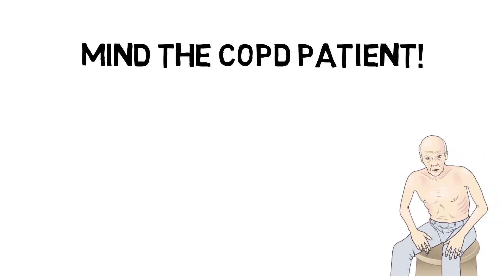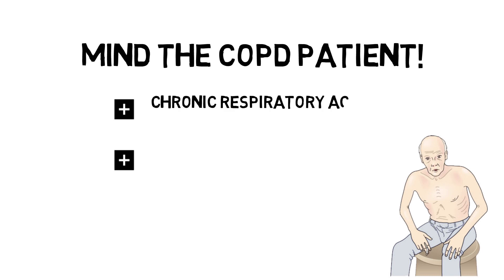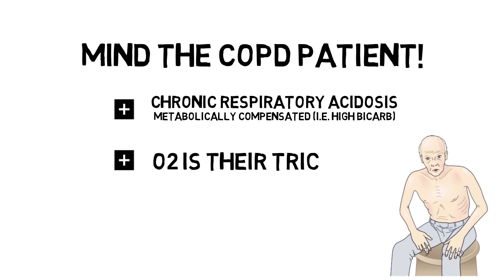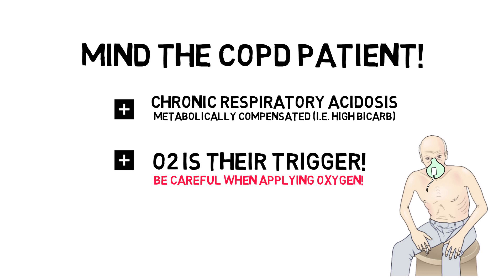The asthma patient, but especially the COPD patient, always has some form of lower airway obstruction. Therefore, they're used to higher CO2 levels than those without. This has two consequences. First, they always have a slight respiratory acidosis, which they compensate metabolically. Secondly, they don't use carbon dioxide as their primary trigger to breathe, but oxygen. So whenever you apply oxygen to a COPD patient, please remember you're removing their trigger to breathe, so be careful.